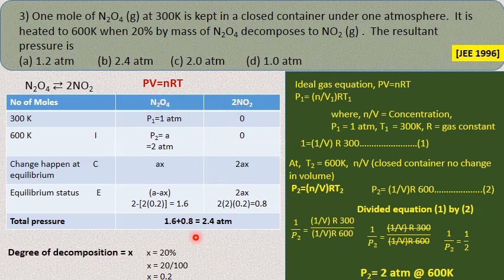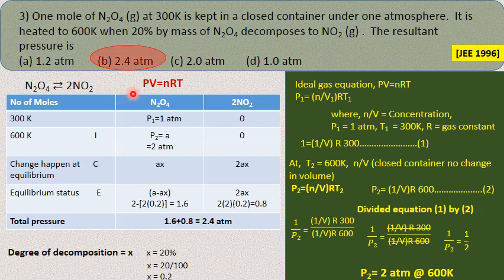The net pressure at equilibrium equals the sum of the partial pressures of N2O4 and NO2: 1.6 + 0.8 = 2.4 atmospheres. The answer is B, 2.4 atm.